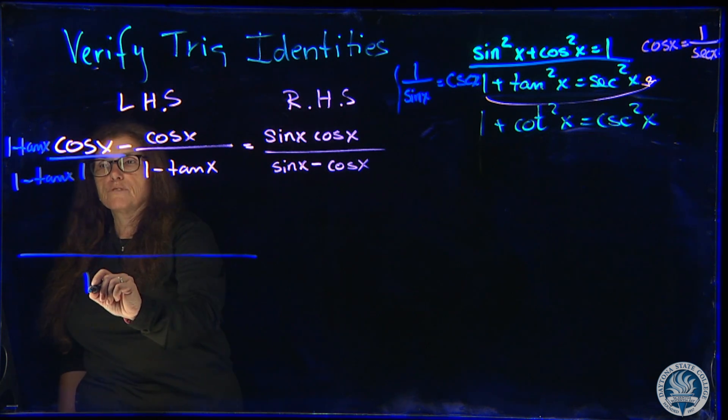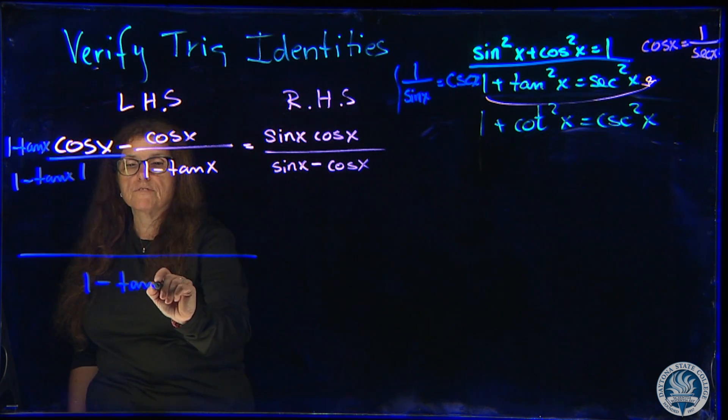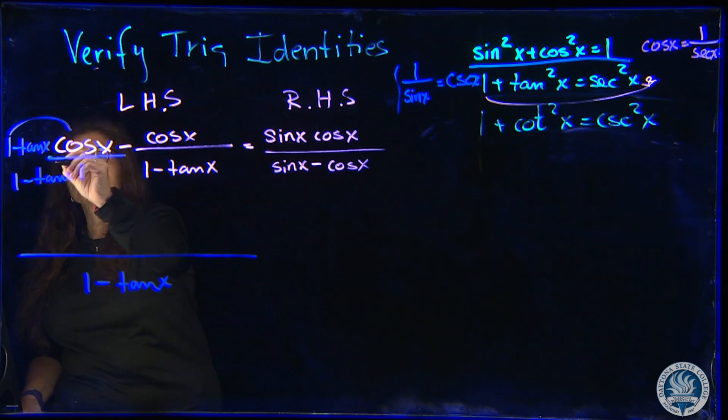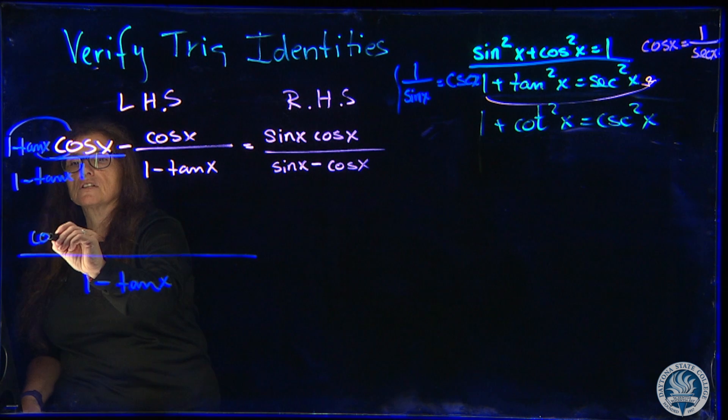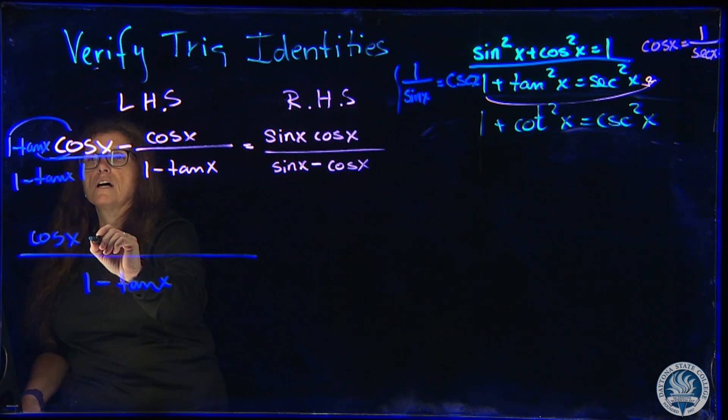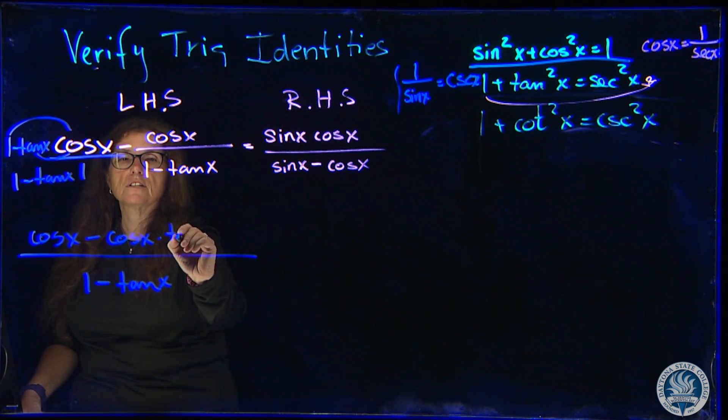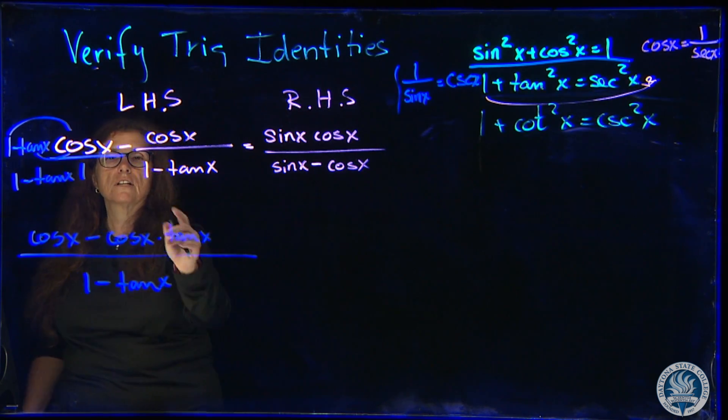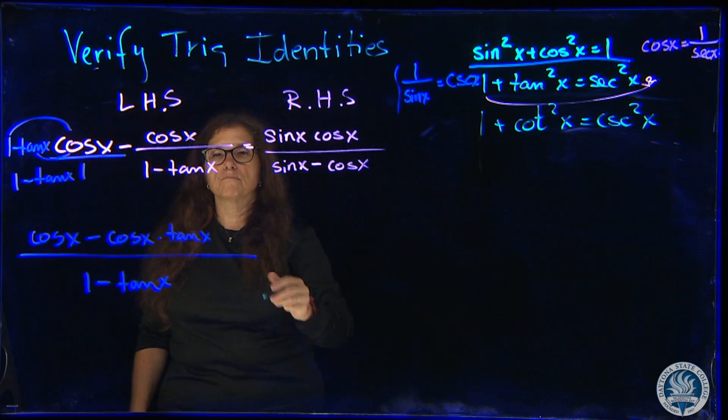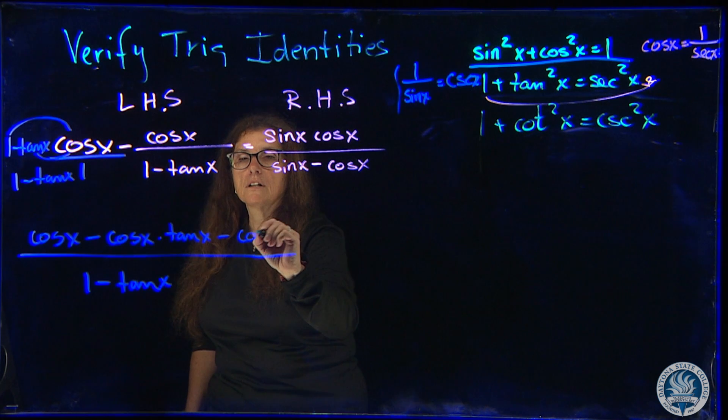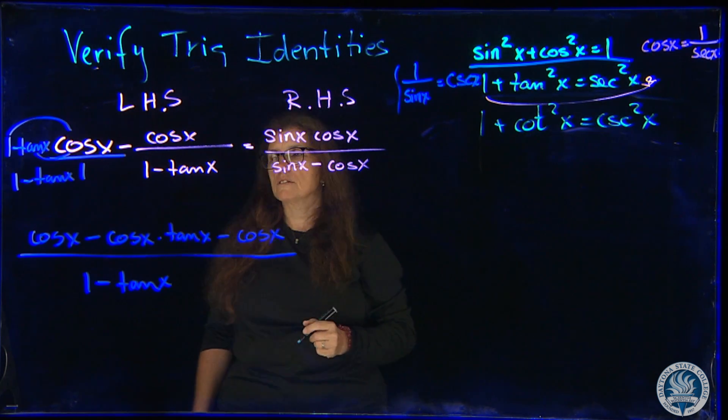So we definitely have 1 minus tangent of x in the denominator. And in the numerator, if we distribute, we have the cosine of x minus the cosine of x times the tangent of x. Don't forget the minus cosine of x from the second fraction.